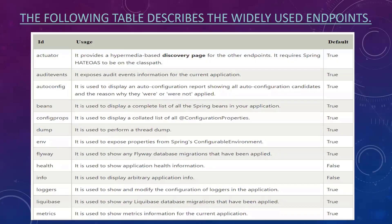The following table describes the widely-used endpoints. The actuator endpoint provides a hypermedia-based discovery page for other endpoints — it requires Spring HATEOAS to be on the classpath. The audit-events endpoint exposes audit event information for the current application. The auto-config endpoint displays an auto-configuration report showing all auto-configuration candidates and the reasons why they were or were not applied.